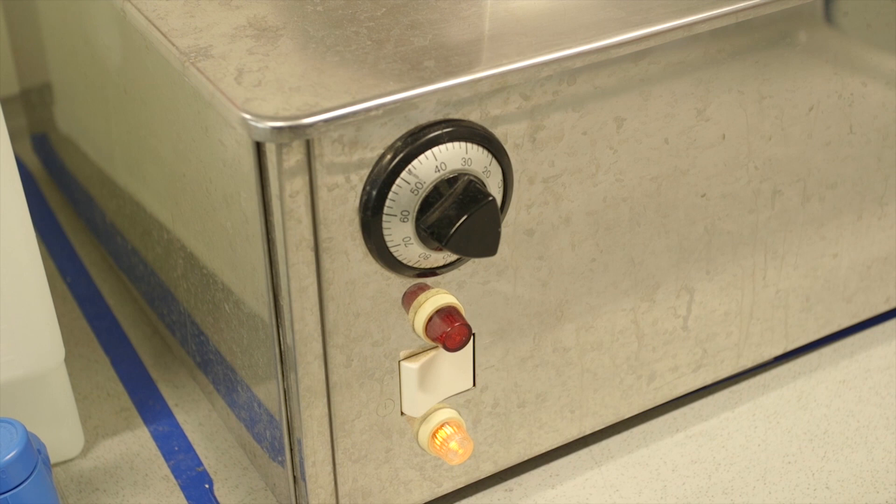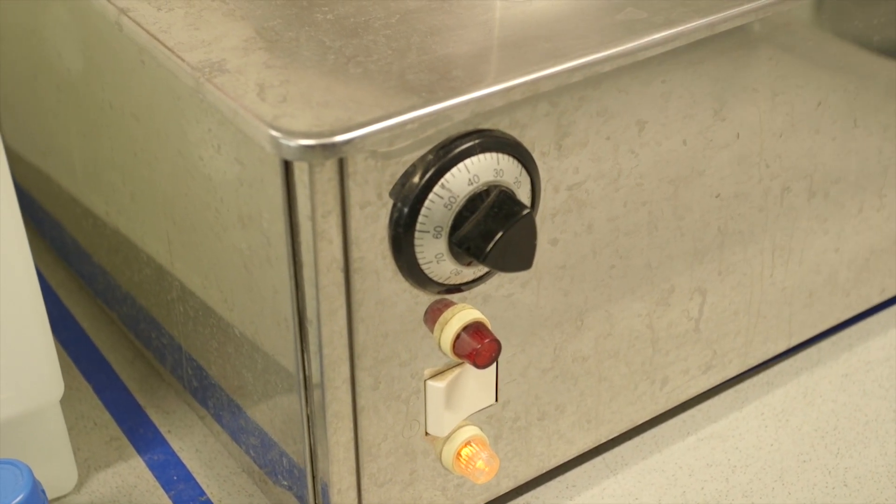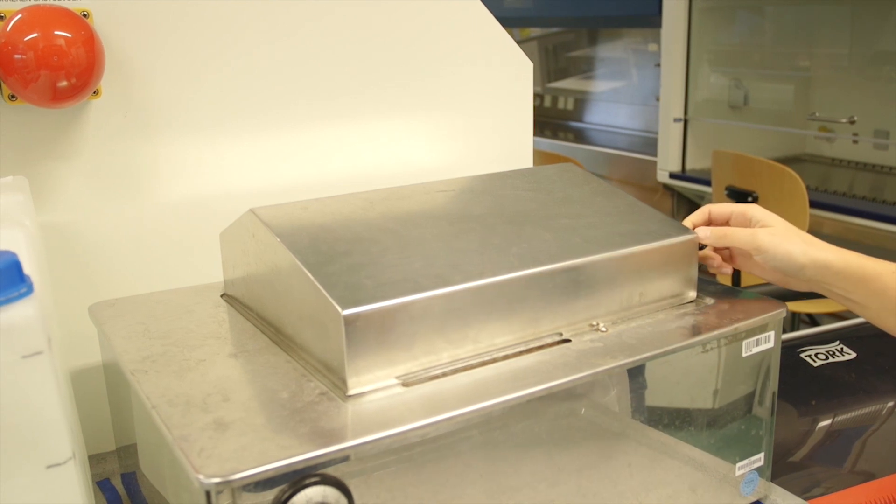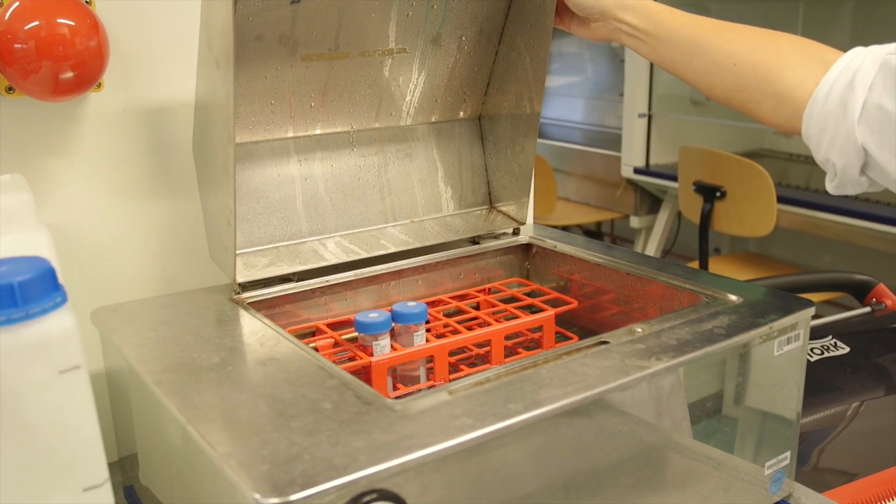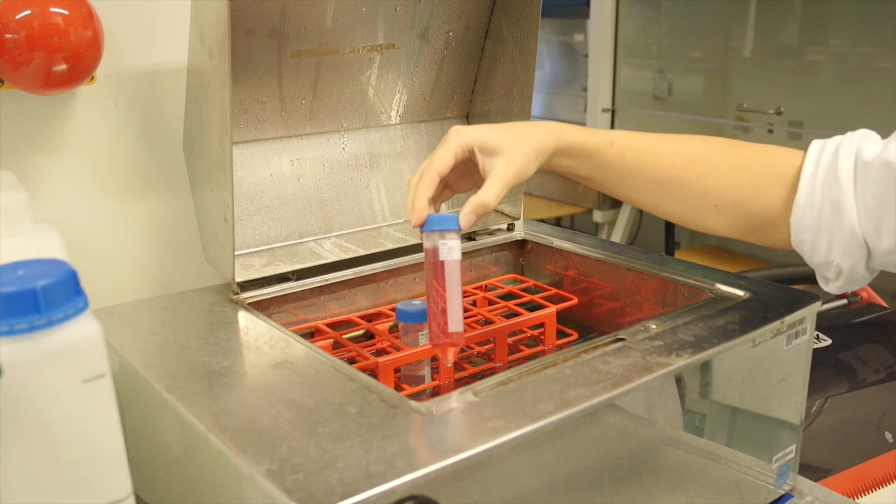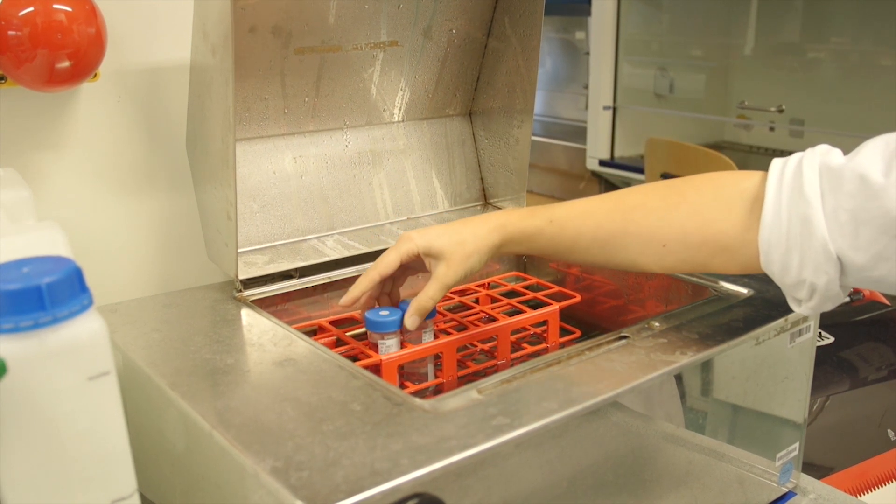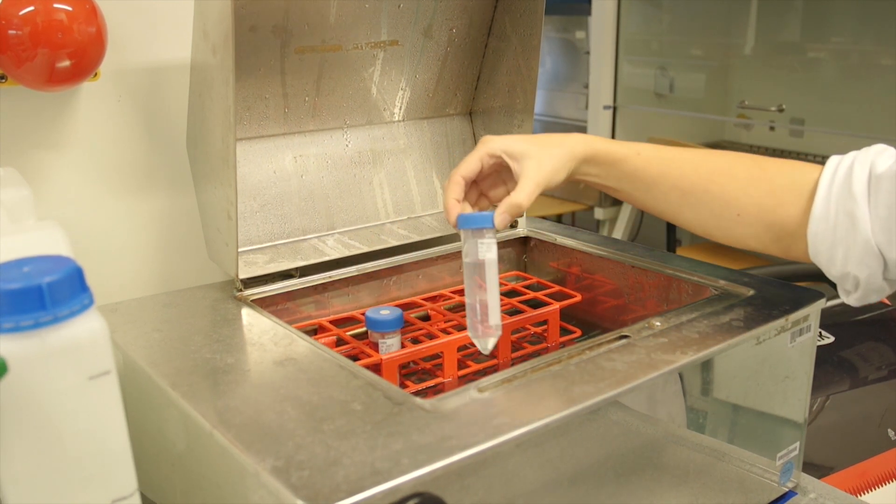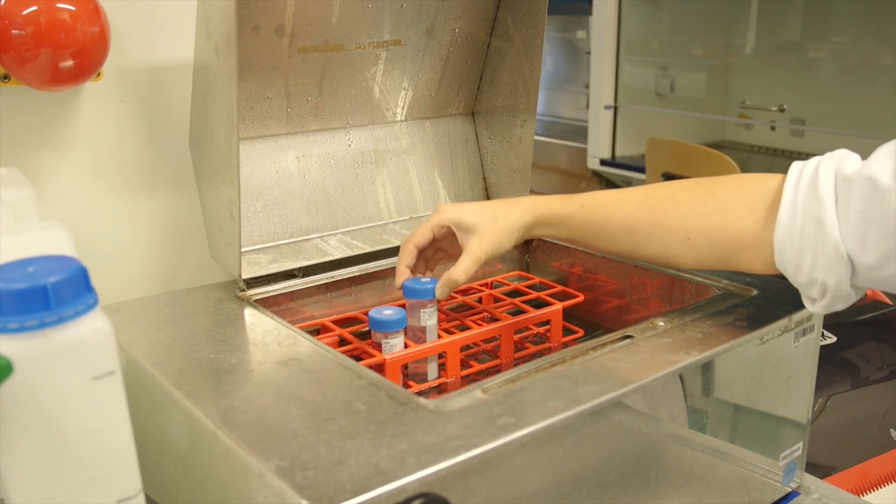The medium and PBS should be warmed to 37 degrees Celsius before use. Turn on the water bath and make sure the water level is high enough, filling with demi-water if necessary. The media should be at the required temperature when needed, but don't let them stay too long in the water bath. Importantly, trypsin should not be put in the water bath.